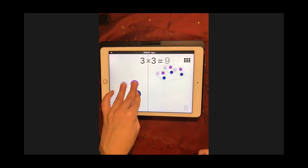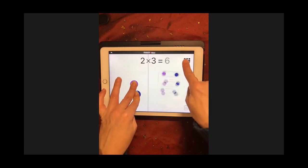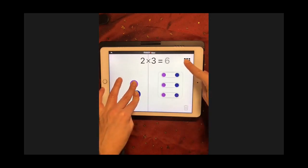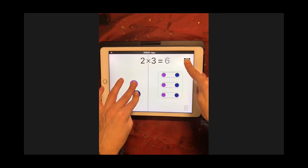You can point to the array button. When I push this button, it will create an array. Notice how touch times organized two times three is six into an array with three rows and two columns. There are three purple pips in one column and three more blue pips in the second column, which shows three doubled.